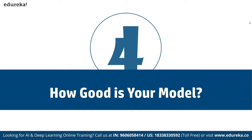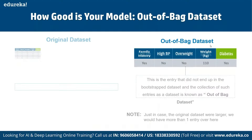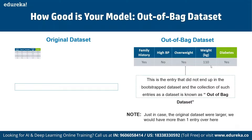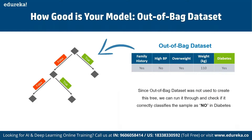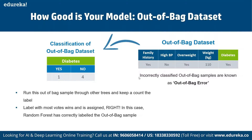To understand how good our model is, we use the out-of-bag (OOB) dataset — approximately one-third of the original data not included in the bootstrap dataset due to duplicate entries. Since the OOB data was not used to build the trees, we run it through and check if it is correctly classified. We run each OOB sample through all trees built without it, assign the label with the most votes, and measure accuracy. This is how Random Forest correctly labels OOB samples and generates the best results.